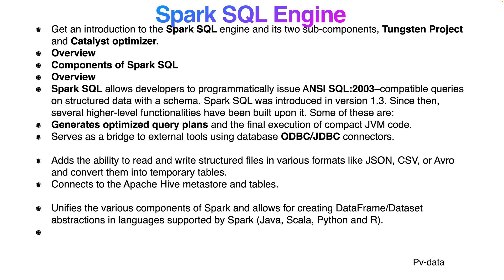Spark SQL was introduced in version 1.3. Since then, several higher-level functionalities have been built upon it, including generating optimized query plans and final execution components of JVM code. It serves as a bridge to external tools using ODBC and JDBC. It also added the ability to read and write structured files in various formats like JSON, CSV, Avro, and convert them into temporary tables.